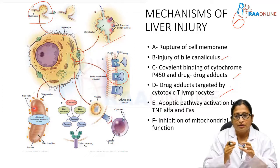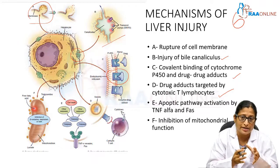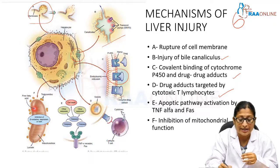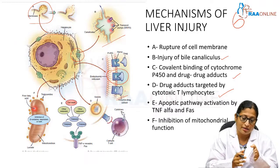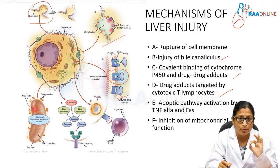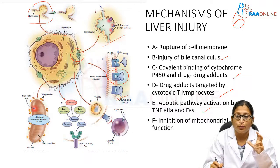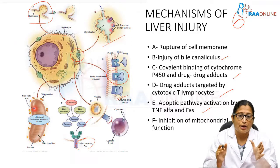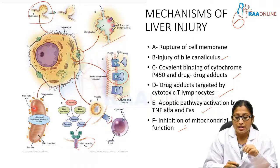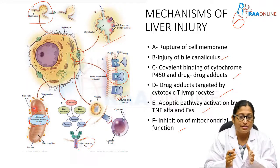The fourth mechanism is immunological. The drug adducts formed by covalent bonding of the drug and cytochrome P450 act as neoantigens. They stimulate cytotoxic T lymphocytes, leading to targeted immunological destruction of cells. The fifth pathway is apoptosis — activation of the apoptotic pathway by TNF-alpha receptor and FAS ligand, stimulation of caspases, resulting in cell apoptosis and death. The sixth and final pathway is inhibition of mitochondrial function — mitochondrial beta-oxidation and respiration are inhibited, resulting in cell death.